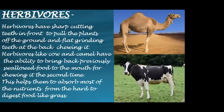Herbivores like cow and camel have the ability to bring back previously swallowed food to the mouth for chewing it a second time. This process of chewing the food is called chewing of cud. This helps them to absorb most of the nutrients from hard-to-digest food like grass.